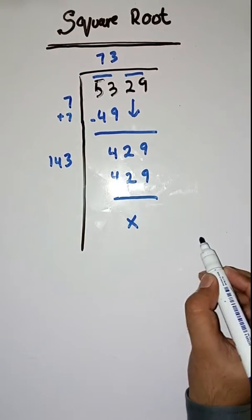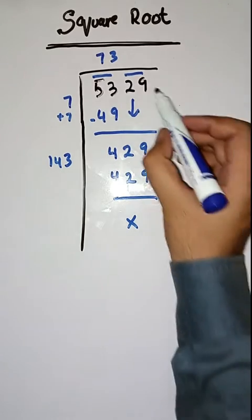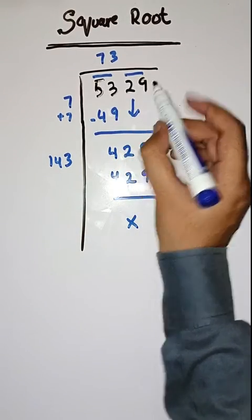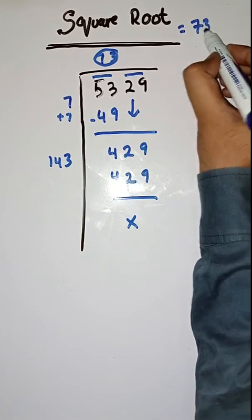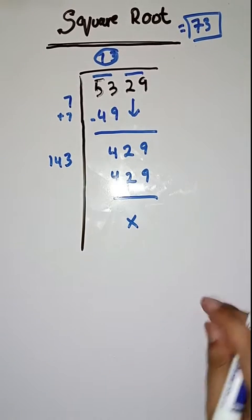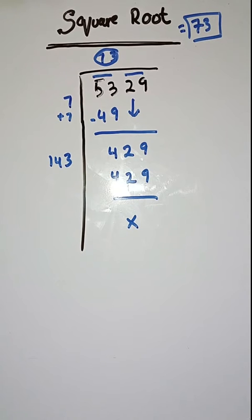So, this is completely solved. Square root of 5329 is equal to 73. Got it? Hopefully students, you get the point. If you have any doubt, you can ask in the comment section.